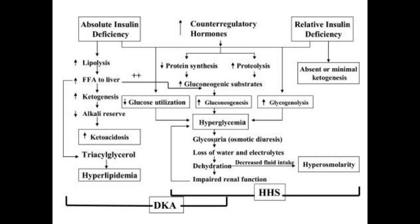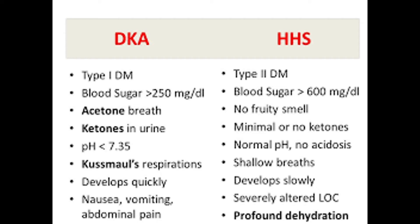DKA is commonly stimulated by fever and infections. DKA — diabetic ketoacidosis — is more common in type 1 diabetes, where there is absolute insulin deficiency. Here you can see the differences between DKA and HHS: type 1 diabetic patients suffer more from DKA while HHS is more common in type 2 diabetes. Blood sugar in DKA is just above 250 mg/dL; in HHS it may be up to 600 mg/dL. Acetone breath — a fruity smell — is present in DKA but not in HHS.